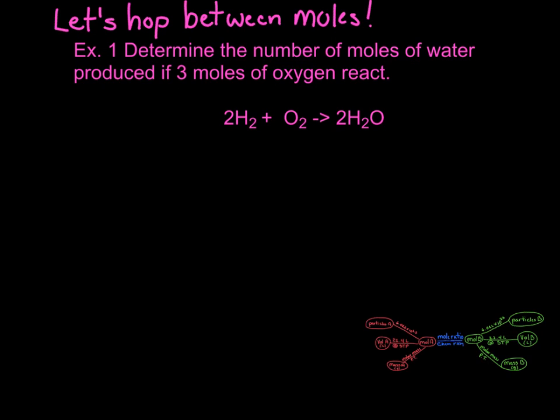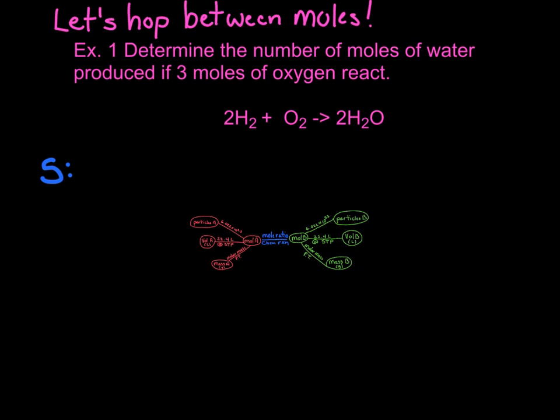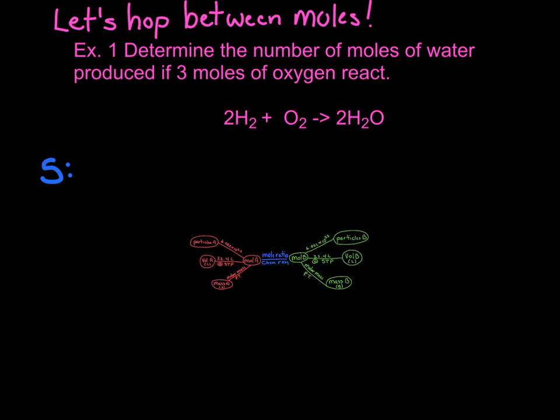I need you to write down this example in your notebook, including the equation. So how do we go about building this conversion factor? Let's take a look. We are asked to determine the number of moles of water produced if three moles of hydrogen react. Let's go back to strategies and knowns. So our strategy here requires us to take a look at our stoichiometry map.